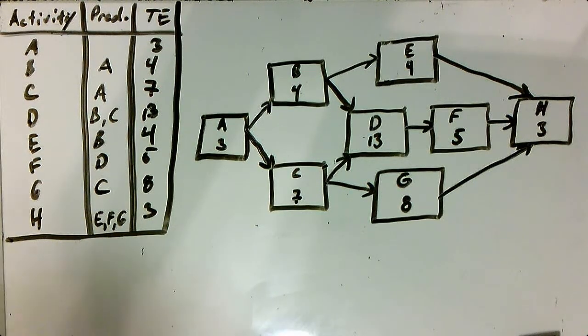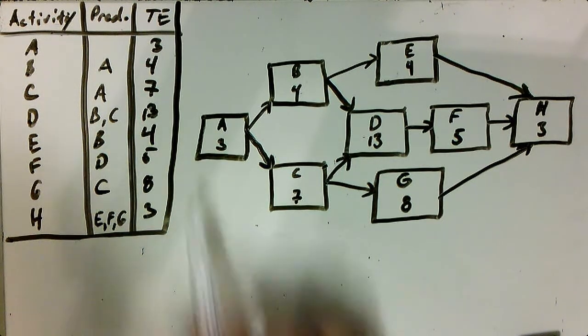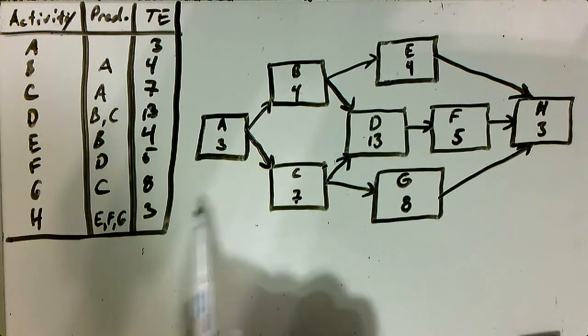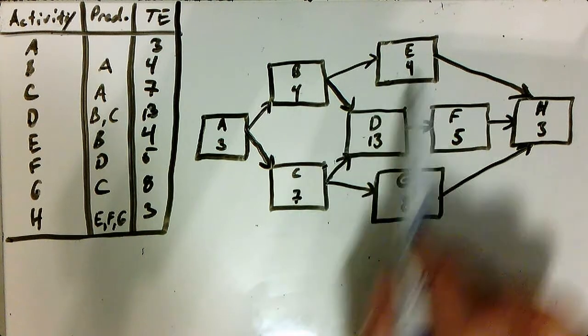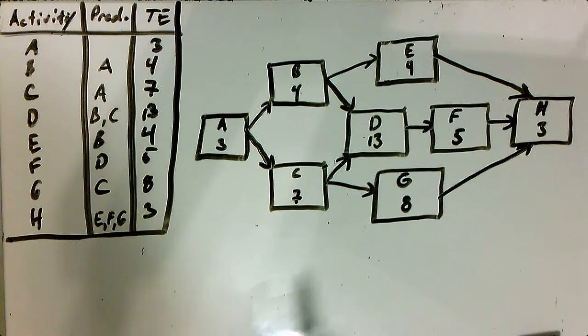Okay, starting off from our network diagram, we can now move forward to determine our critical path. So I've included our TE estimates that we did in the last video. That's where we get the 3, 4, 4, 13, these numbers, and our network diagram is all drawn out.